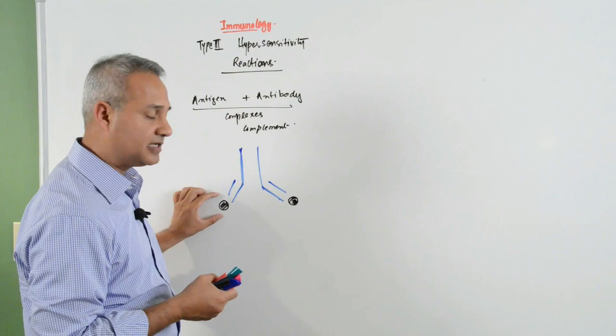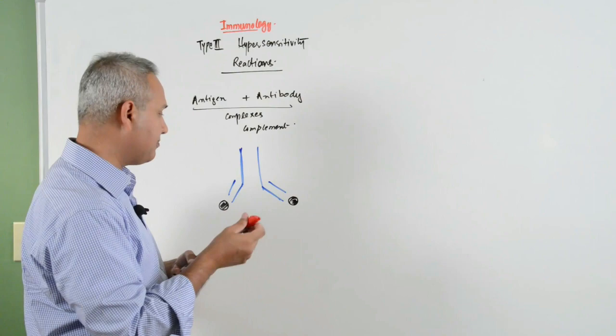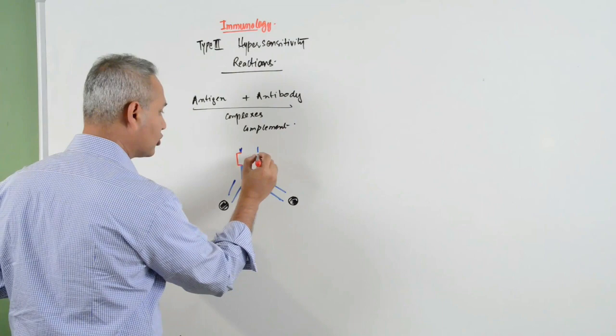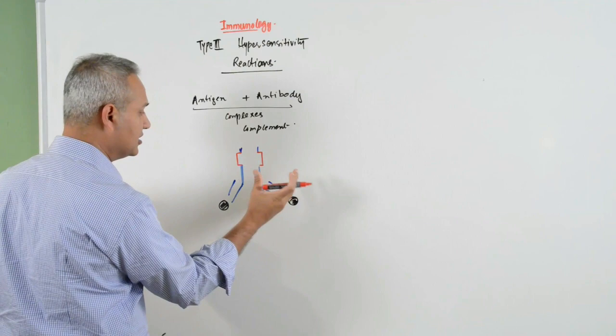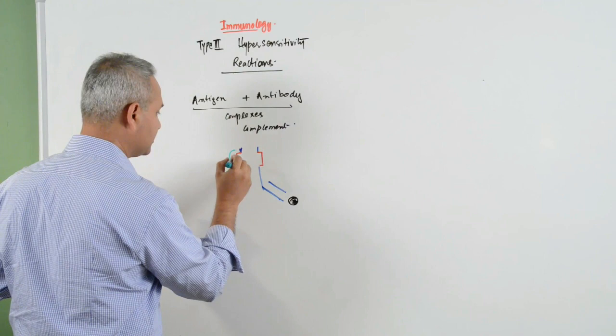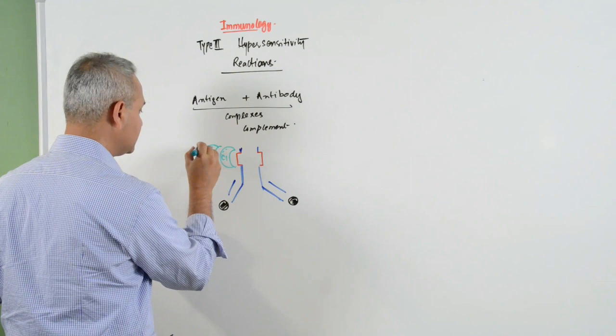That causes conformational change because it is a protein. This conformational change causes the sites for complement fixation on the Fc side of the antibody to become revealed. These complement fixation sites then allow complement to be attached here, so C1 and then other complement factors they get attached and activated.